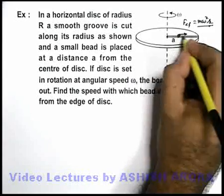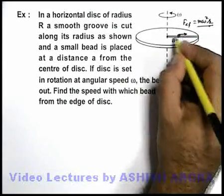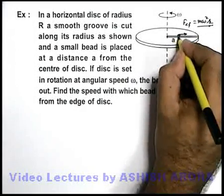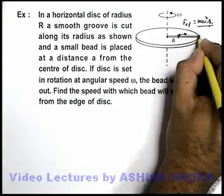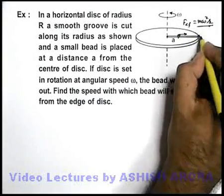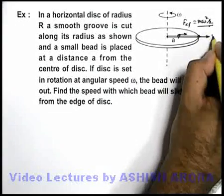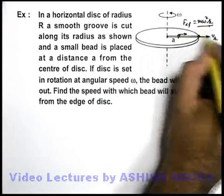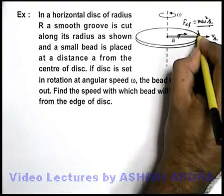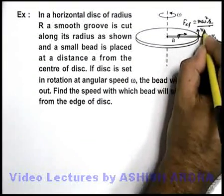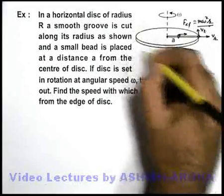Or r is the distance from axis of rotation, and we are given that initial value of r is a. Finally when it'll slip out of the edge of the disc, it'll be having some radial velocity vr in outward direction due to centrifugal force. Along with this it'll also be having a tangential velocity vt due to the rotation of this disc.